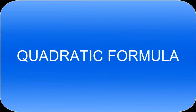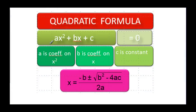This video will talk about the quadratic formula. If we have a quadratic equation, it's going to be in the form of ax squared plus bx plus c equal to zero. Notice it has to be equal to zero — it must be equal to zero. And the formula is going to have a's, b's, and c's in it.